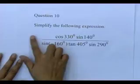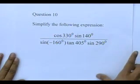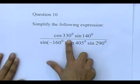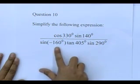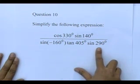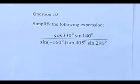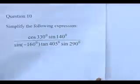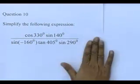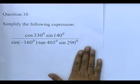I come to a trigonometry question — when I saw this question I said I have to do it with you. Everybody, calculators are on, pen and pencil ready. Look at the sum: simplify the following expression. It says cos of 330 multiplied by sin of 140, sin of negative 160, tan of 405, times sin of 290. When I see a question like this, we mustn't use a calculator — simplify without a calculator.